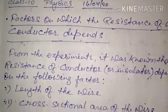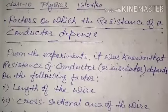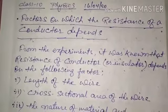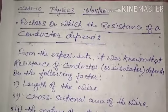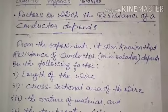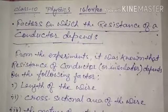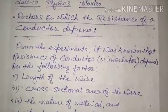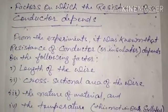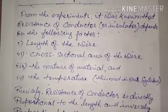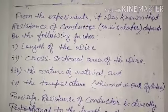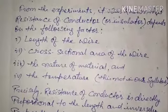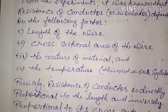Hello and welcome. Today's topic is factors on which the resistance of a conductor depends. This is a topic from Electric Current of Class 10th. In the last class we discussed Ohm's law, and today we are going to discuss the factors on which the resistance of a conductor depends. From the experiment it was known that resistance of a conductor depends on the following factors.